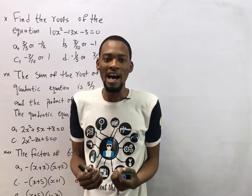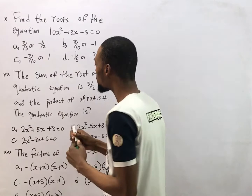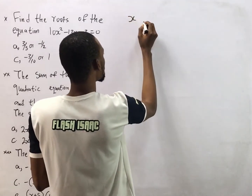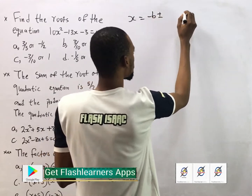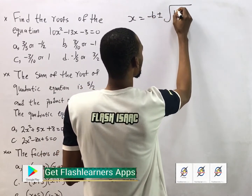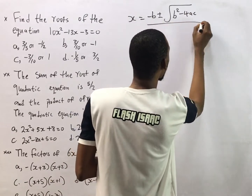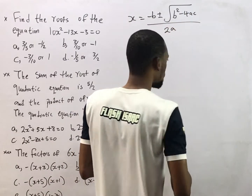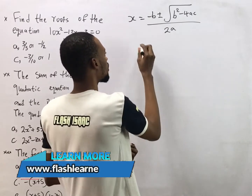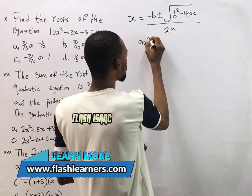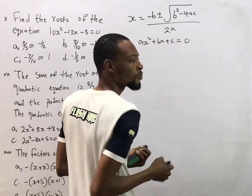In this case I choose to use the formula method. The formula for solving a quadratic equation is: s equals negative b plus or minus the square root of b squared minus 4ac, all over 2a. The standard form of a quadratic equation is: as squared plus bs plus c equals zero.